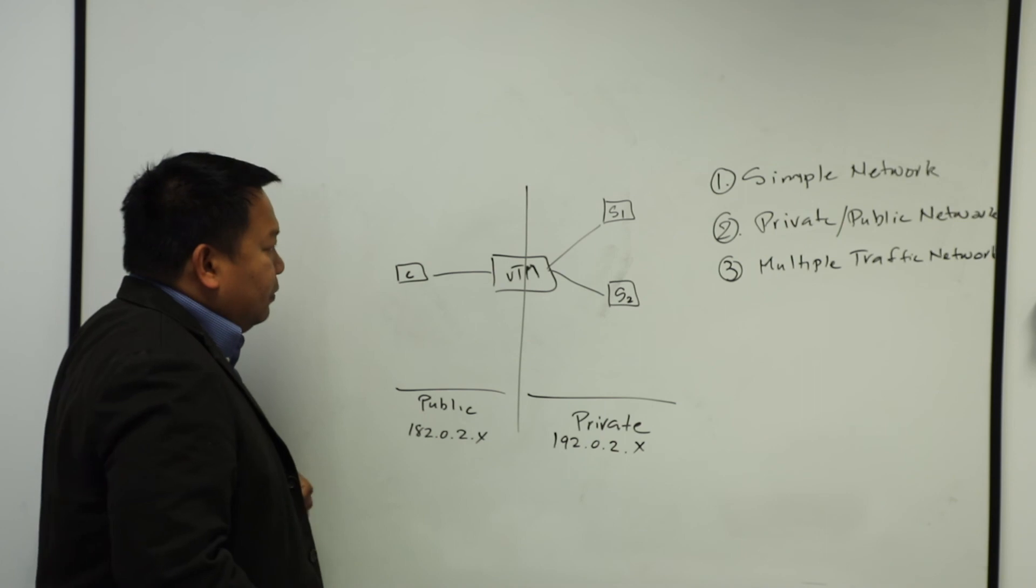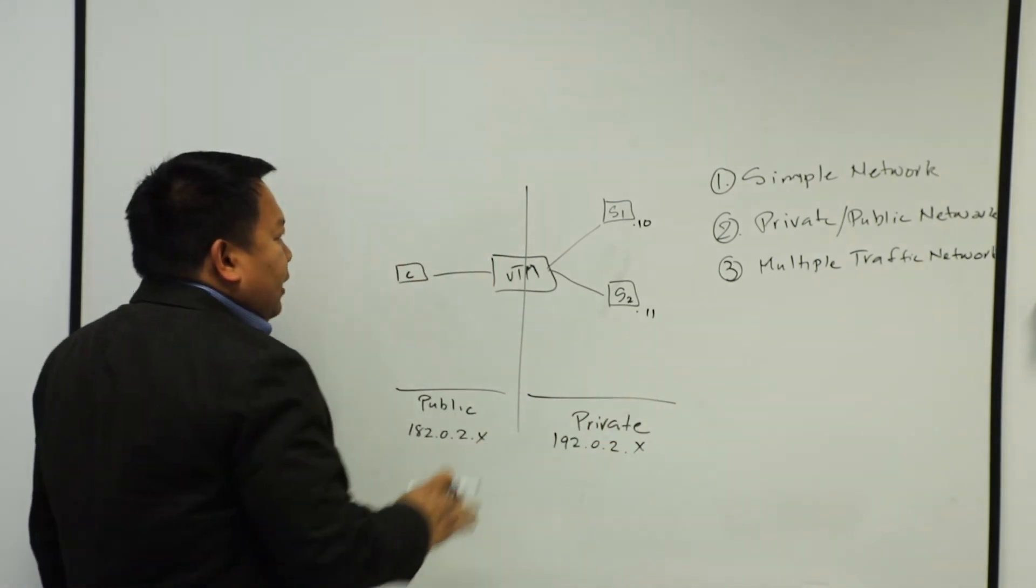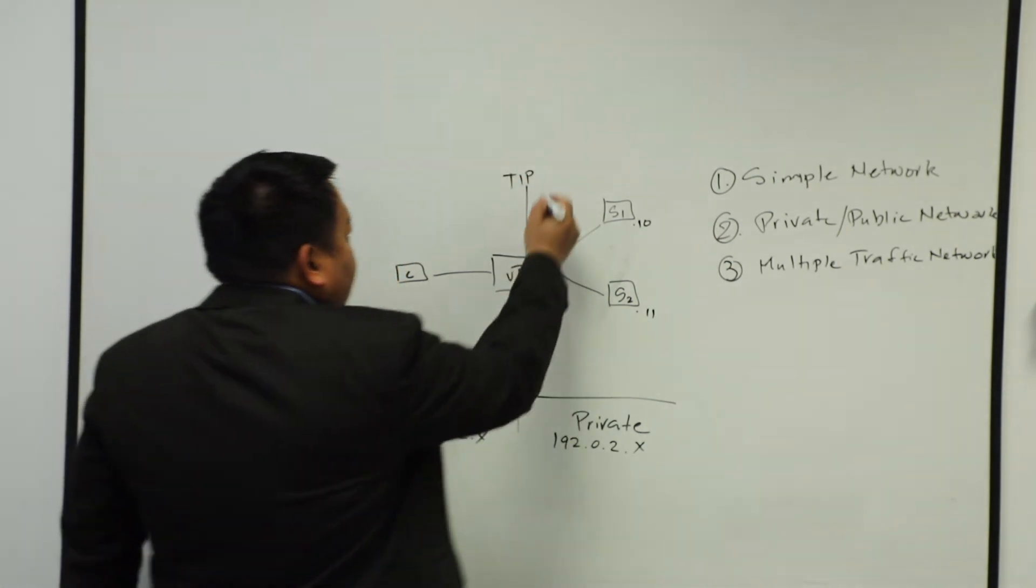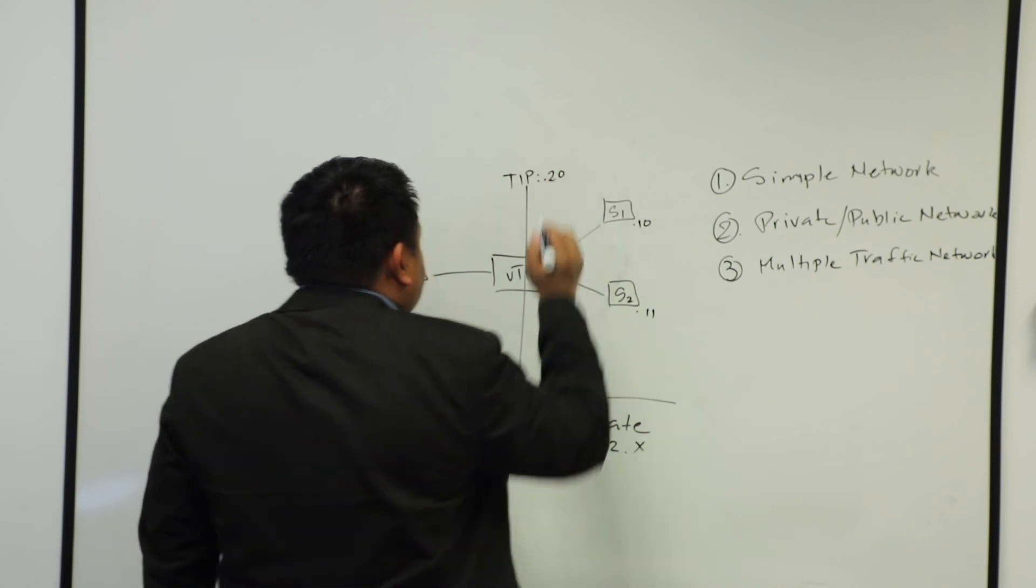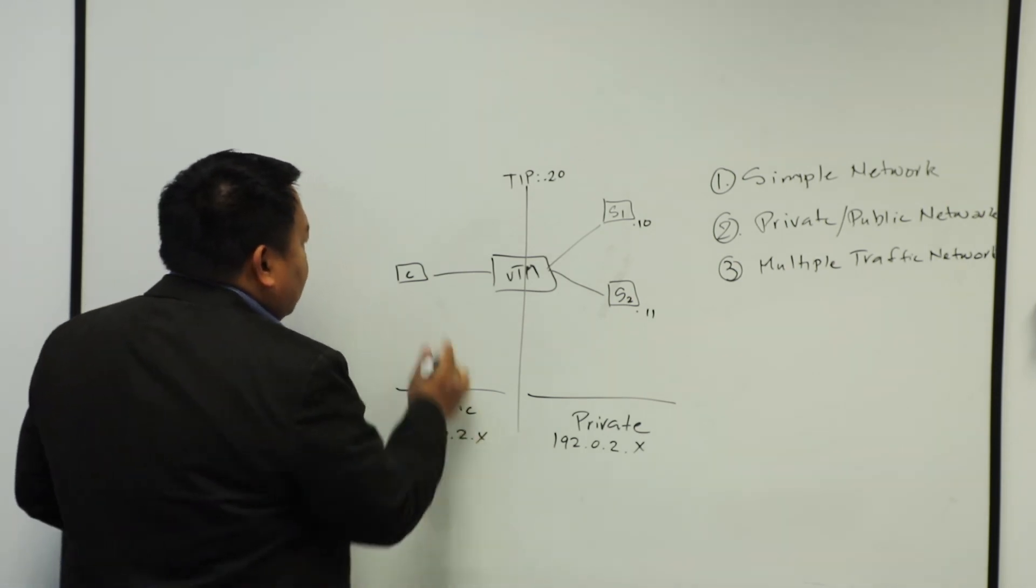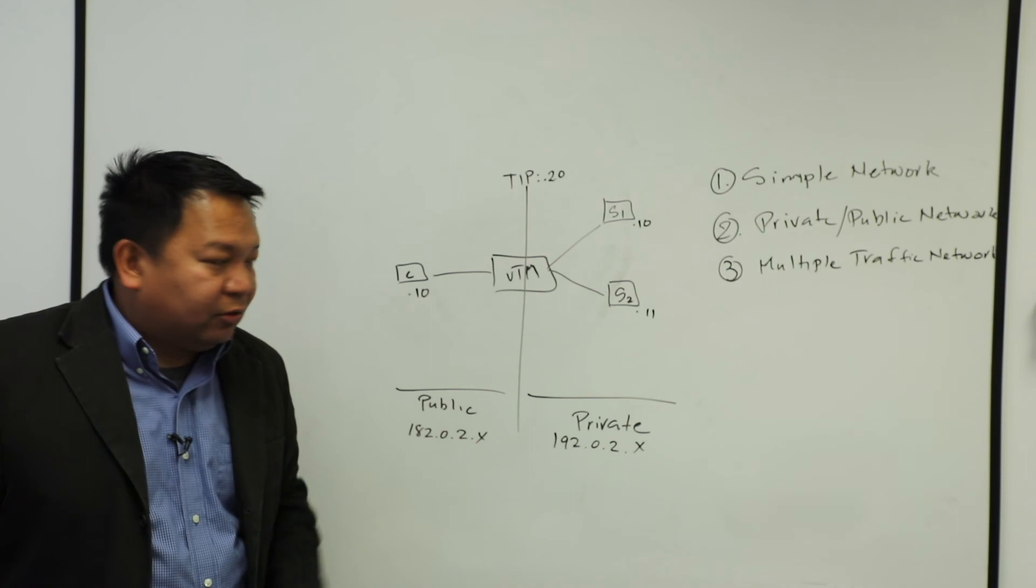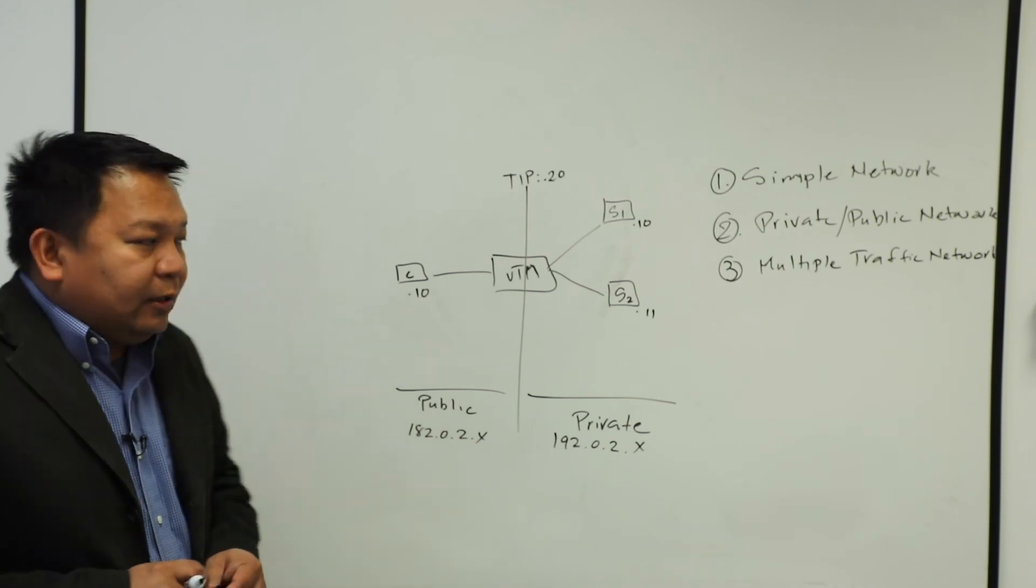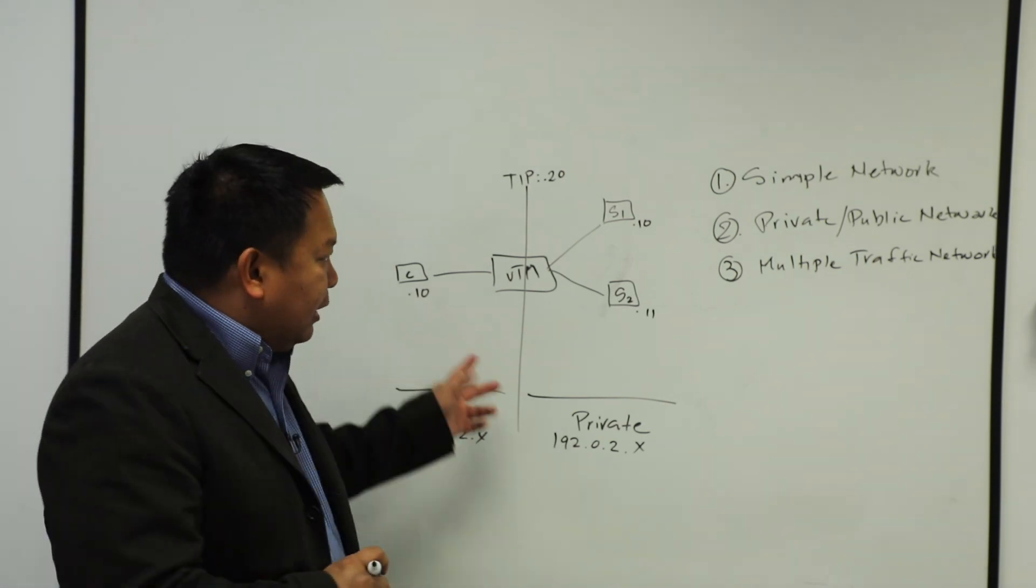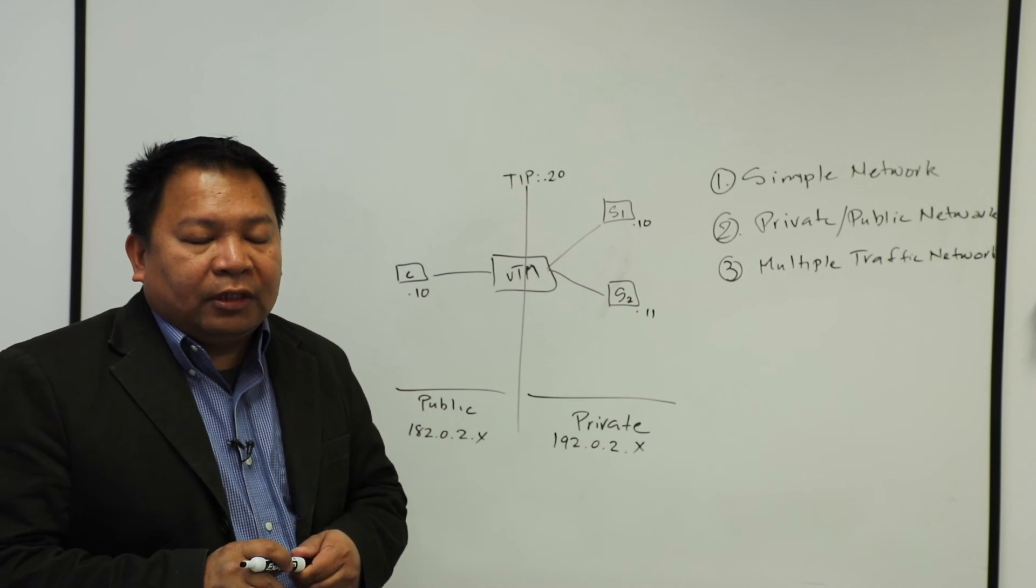So I'm just going to address them accordingly. On the S1, I'm going to address it probably .10, .11. And then anything accessible from here, I will address it as, this is for the tip, traffic IP. I would address it as .20. And then since this is a totally different network, I will address this thing as 182.02.3.10. And if you have additional clients, you could just address them accordingly. So this is what we call the private and public network topology. This is commonly used in production environment to pretty much increase security and provide reverse proxy capability in the production environment.